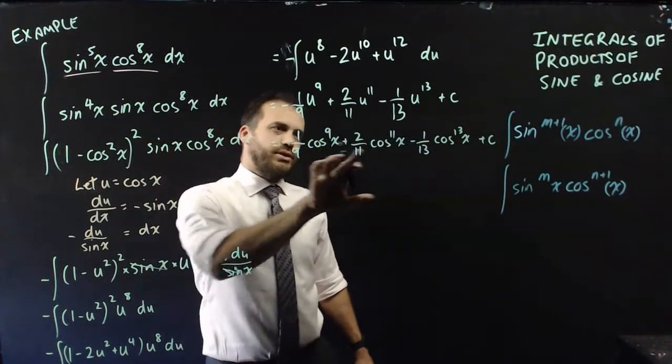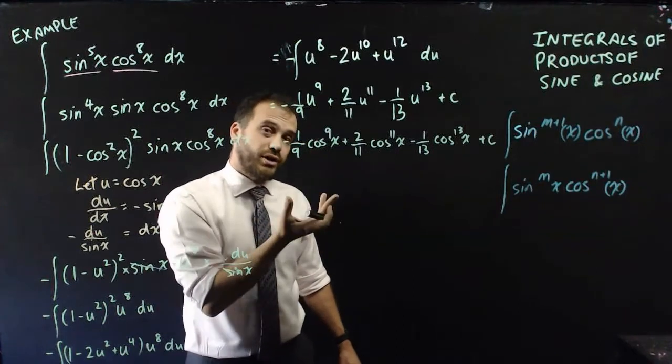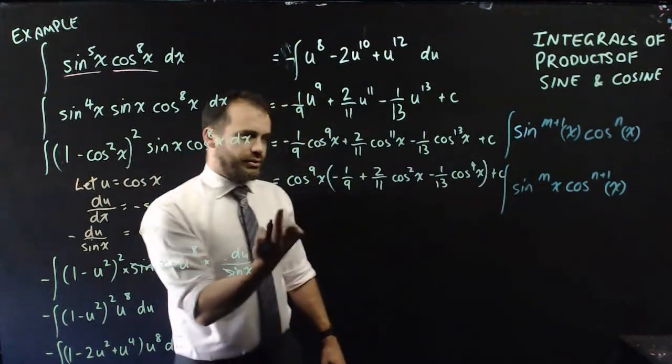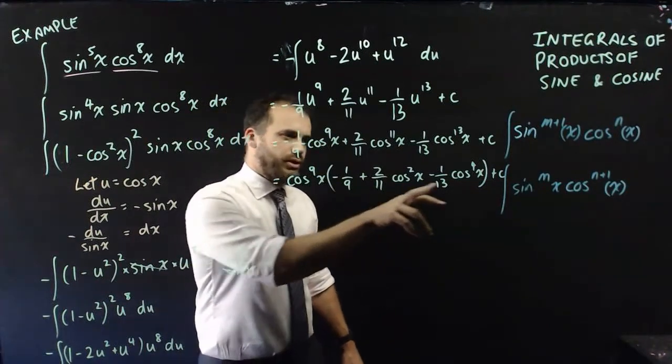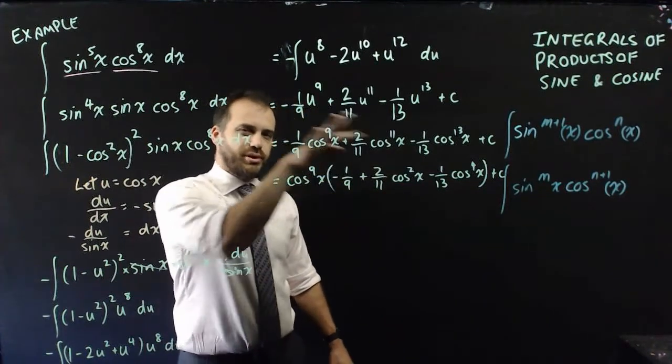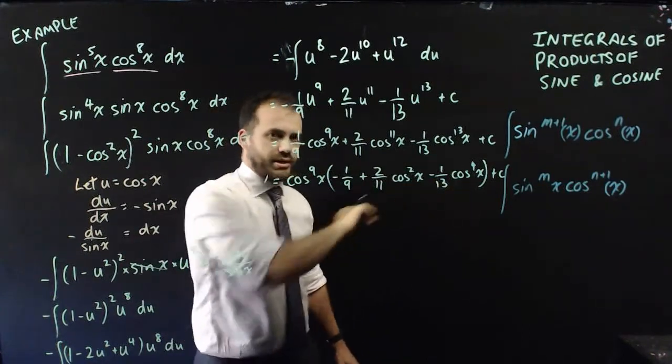Now, you can factorize it by taking a common factor of cos 9 out the front, and you'll get something that looks like that. Now, other textbooks might do something like multiply all of our denominators together and bring them out or do something like that, but I'm happy with where I am at here.